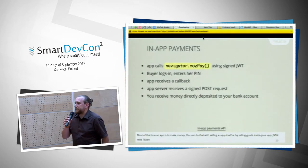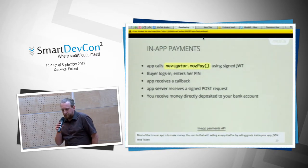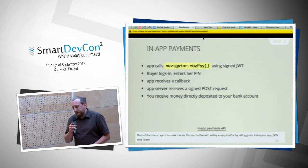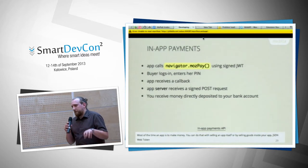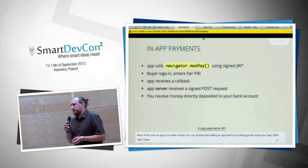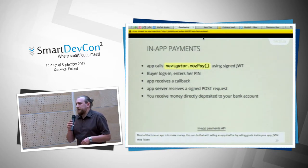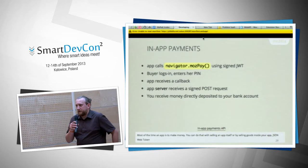In-app payments are done well in Firefox OS. First you sign up in the marketplace to receive money from your application. In your app, you sign a JSON Web Token on your server, then send the token to navigator.mozPay. This is sent to the marketplace, the user logs in using Persona and enters their PIN. You get a callback indicating success or failure, and your server also receives a POST request from the marketplace — so you can't be cheated. Then the money goes to your bank account.